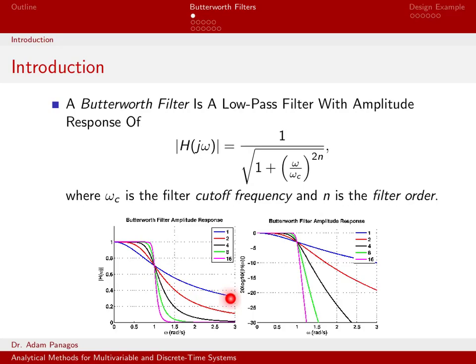As your filter order increases, maybe to order 16, if you look at this magenta line here, it starts to look more like a step function almost. It's very flat. There's a very sharp transition. And then at higher frequencies, it has very low gain. So depending on what you want your actual filter amplitude response to look like, you can set the filter order appropriately to design a filter that has the frequency roll off that you like.